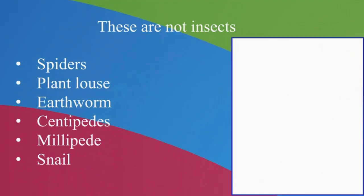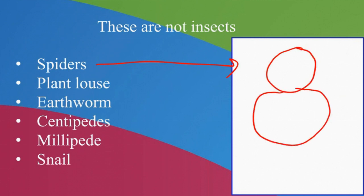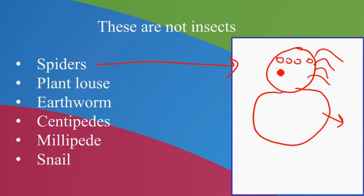People think spiders are also insects. But which animals are not insects? Spiders are not insects because a spider's body is divided into two parts — one is the head having four legs, and the second is the abdomen. So the main difference is the number of body parts: insects have three, spiders have two. Insects have two compound eyes, and spiders have eight eyes. So spiders are not insects.